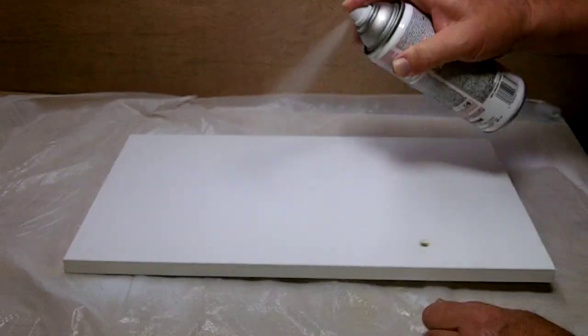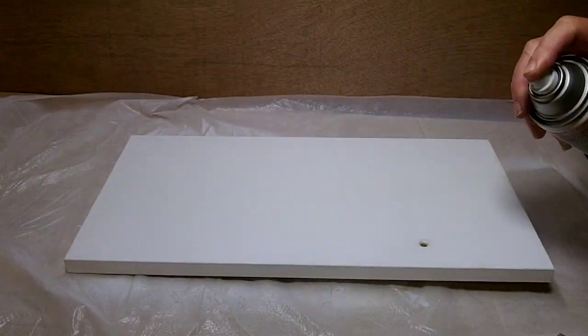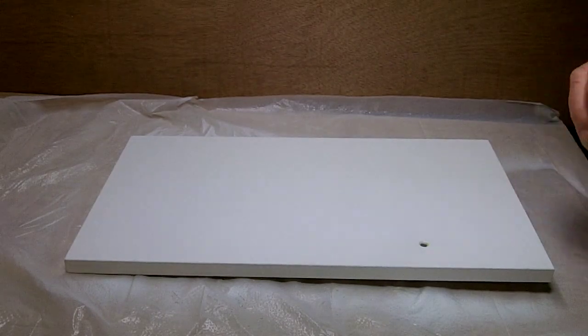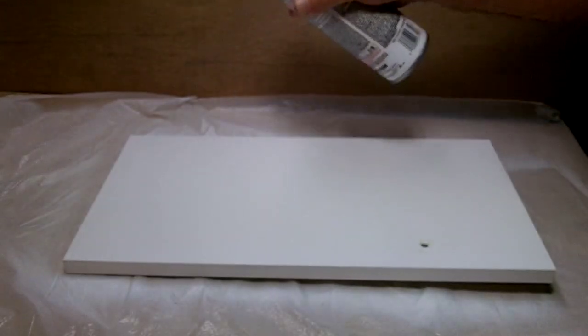Now you can take the bonding primer and give it three or four good heavy coats both front and back. Also make sure you get the ends on the sides.